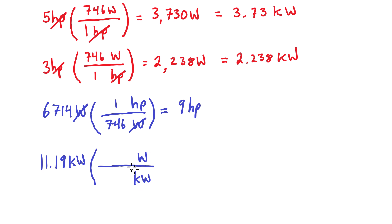And we know that 1 kilowatt is 1,000 watts, so those units cancel. We're left with 11.19 times a thousand, and that just gives us 11,190 watts.